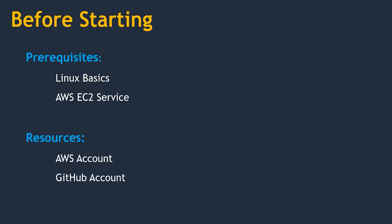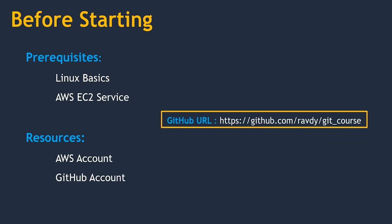Regarding resources: you should have an AWS account. If you don't, at the end of this course I've added a separate lecture on how to create one. Next, GitHub account — I am going to create a GitHub account during this course, so you don't need to create one now. The resources and documents used during this course are updated at the GitHub URL shown.